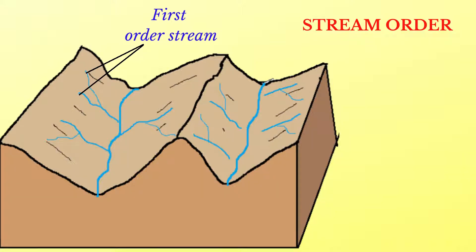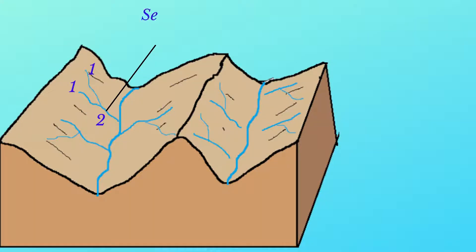The streams within a drainage basin are arranged in a hierarchical pattern referred to as a stream order. According to the law of stream order, all the initial unbranched source tributaries are called first order streams. When two first order streams meet they form a second order stream; when two second order streams meet they form third order streams, and so on. As long as two stream segments of the same order meet, the resulting stream segment is going to be of a higher order. A drainage basin can therefore be described in terms of the highest order stream.